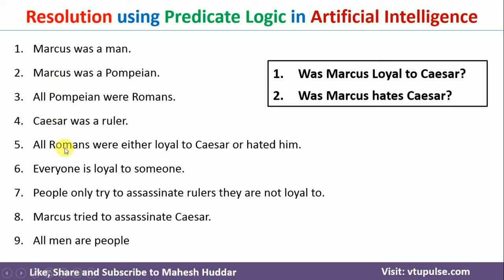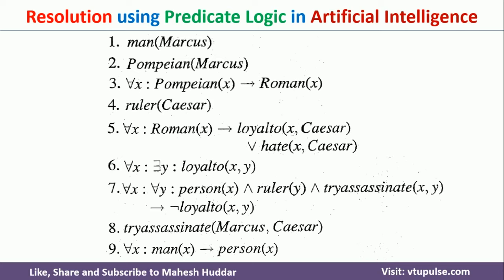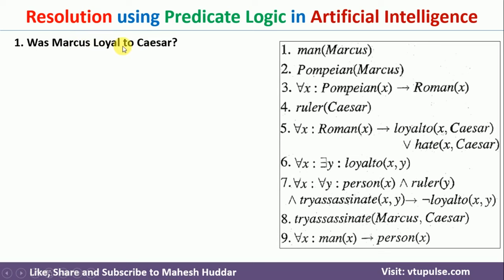Once you follow that procedure, you will get these 9 logical statements. Given these 9 logical statements, we need to know whether Marcus is loyal to Caesar or not. To get the answer, we need to select one of the premises which will give us the answer.